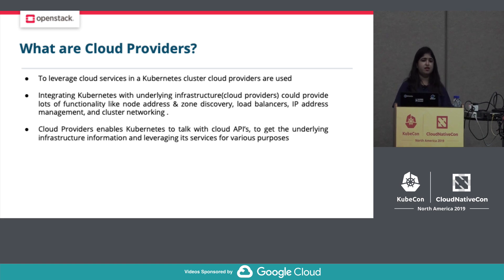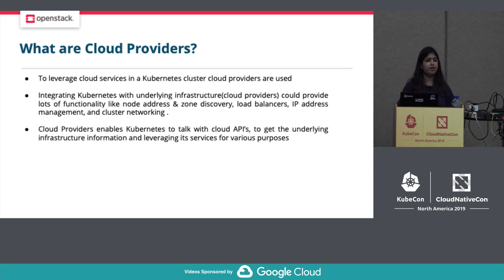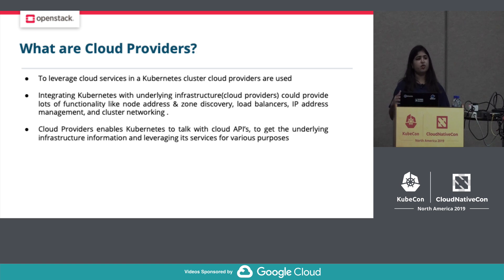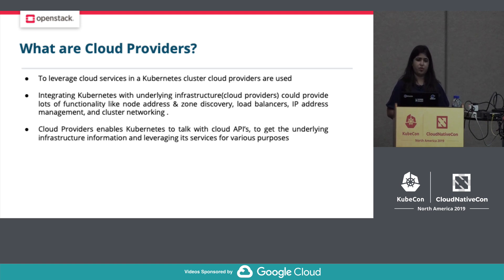When Kubernetes started, they had all the cloud providers in-tree — like Azure, OpenStack, and GCP. All the code for the cloud provider was built inside the Kubernetes binary and resided in the main Kubernetes repo. As the number of cloud providers grew, it became very difficult to manage all cloud providers in the Kubernetes repo, and they were facing maintenance issues and a growing binary size. So they decided to move all cloud providers out-of-tree.